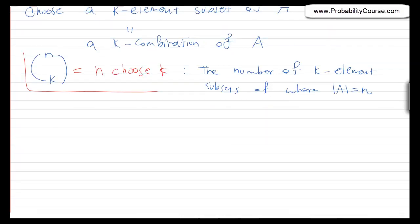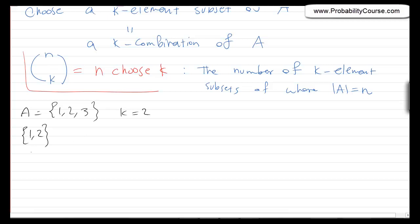Let's look at a simple case where A has three elements, and k equals 2, so I want to choose two elements. How many options do I have? Well, it could be 1 and 2, 2 and 3, and 1 and 3. That's all — three of them.